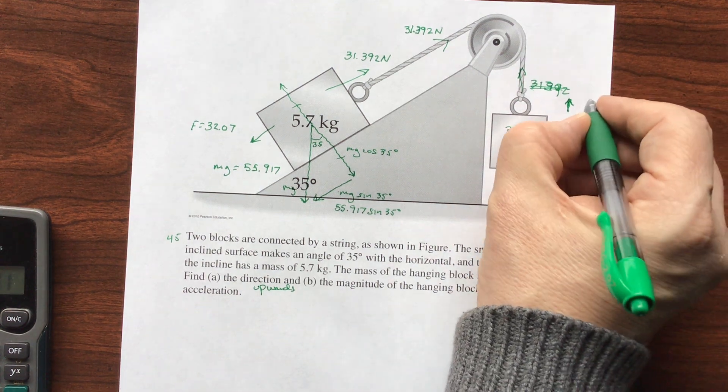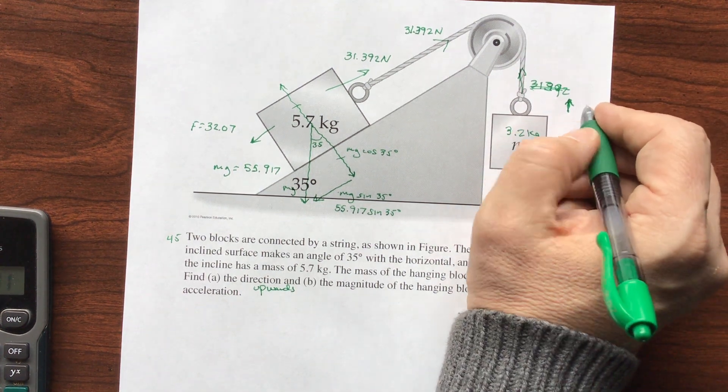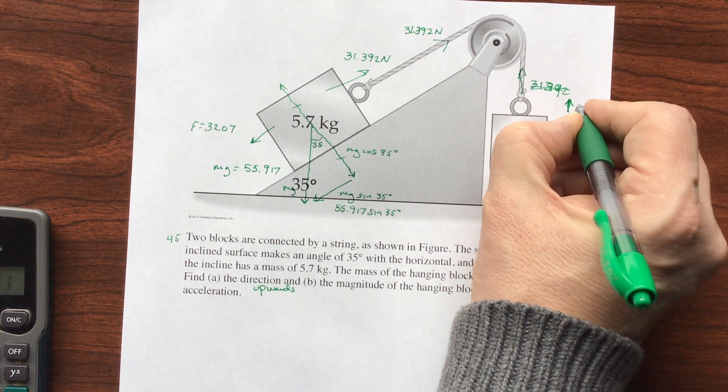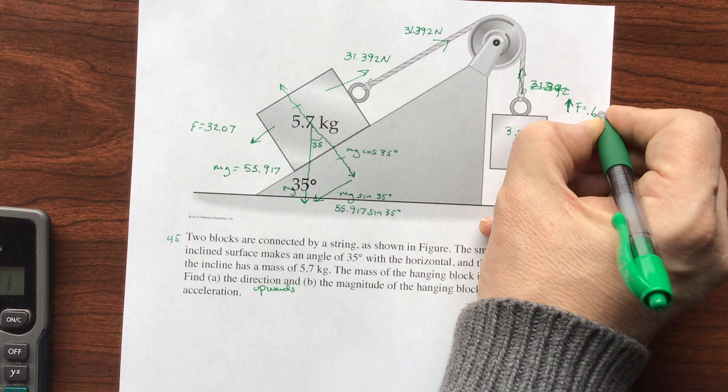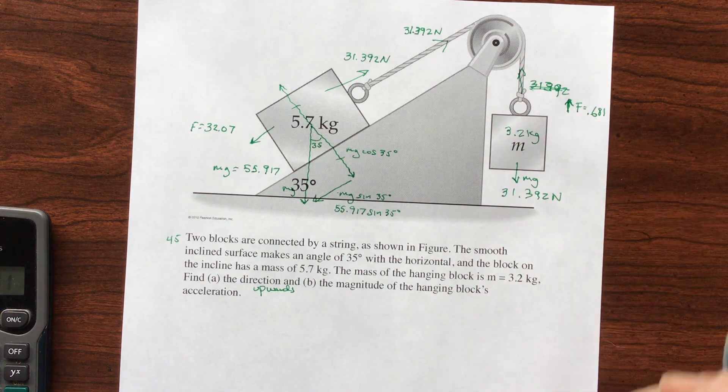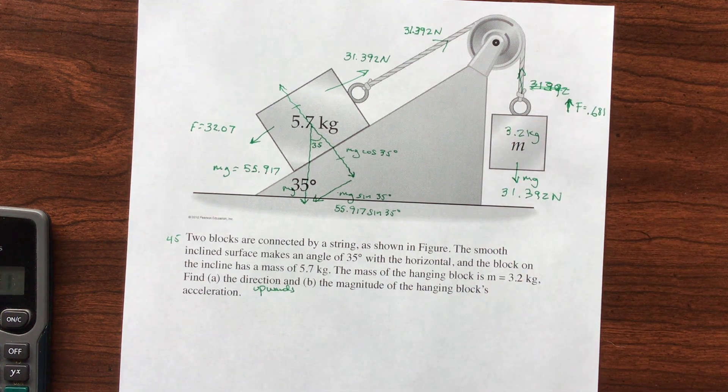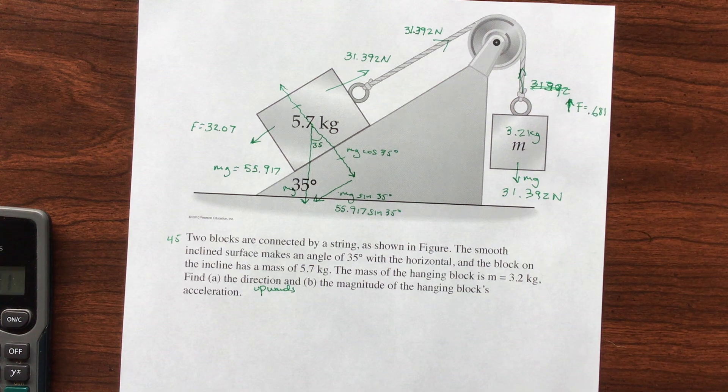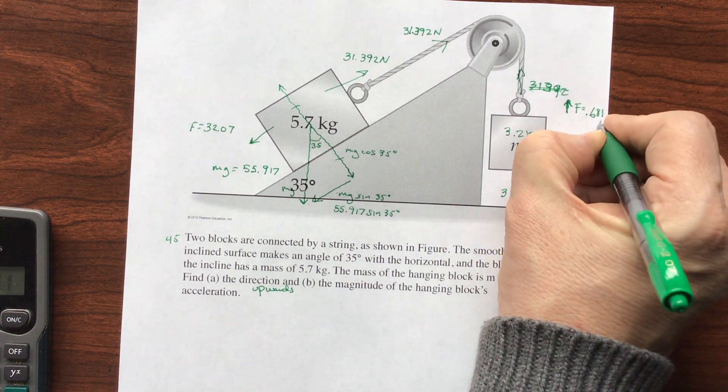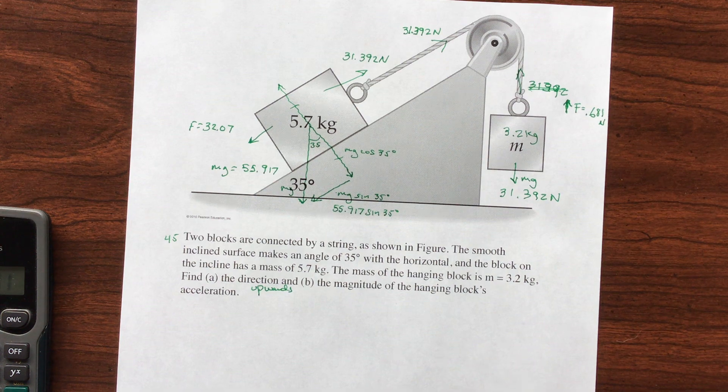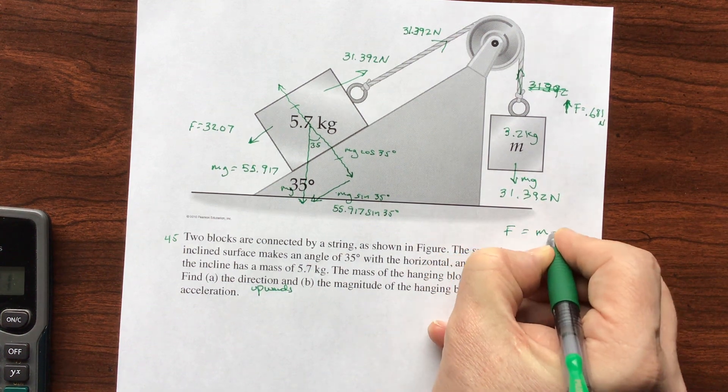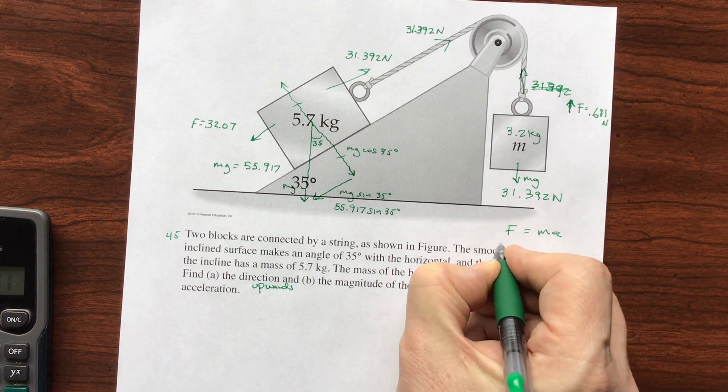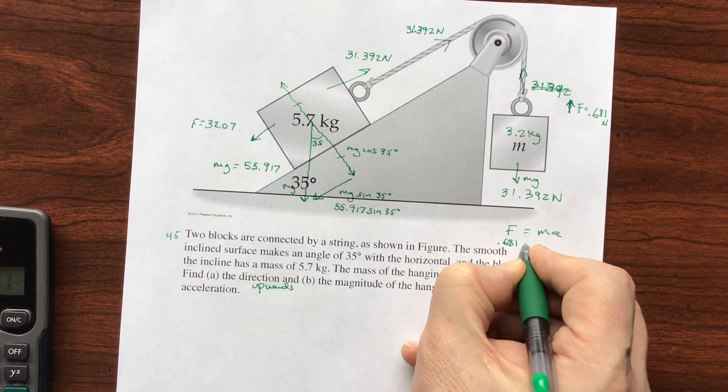And the force, the net force, is going to be 0.681 meters per second squared. That's the force. That's the newtons. I'll put newtons there, 0.681 newtons. So to find acceleration, we do F equals MA, and the force is equal to 0.681.